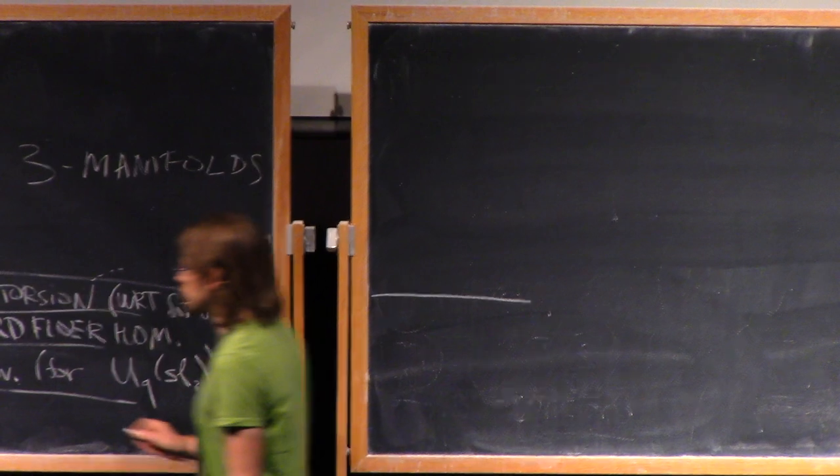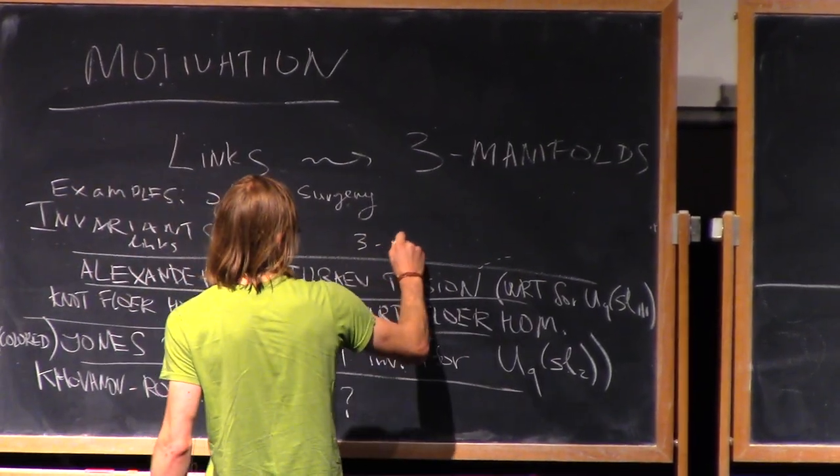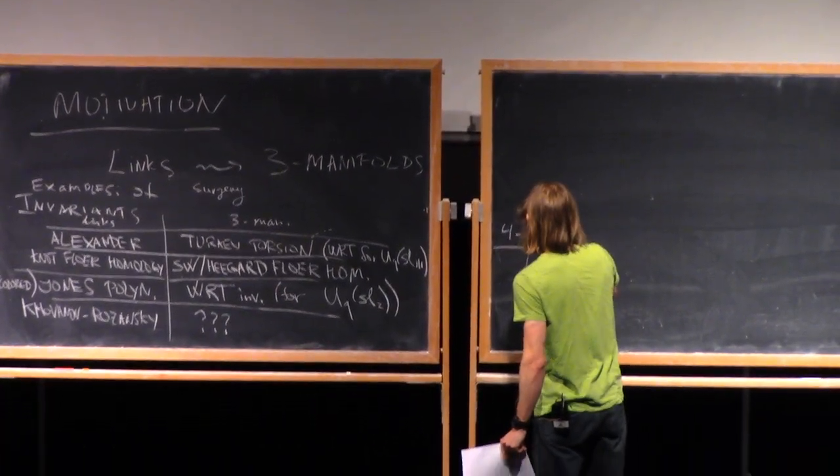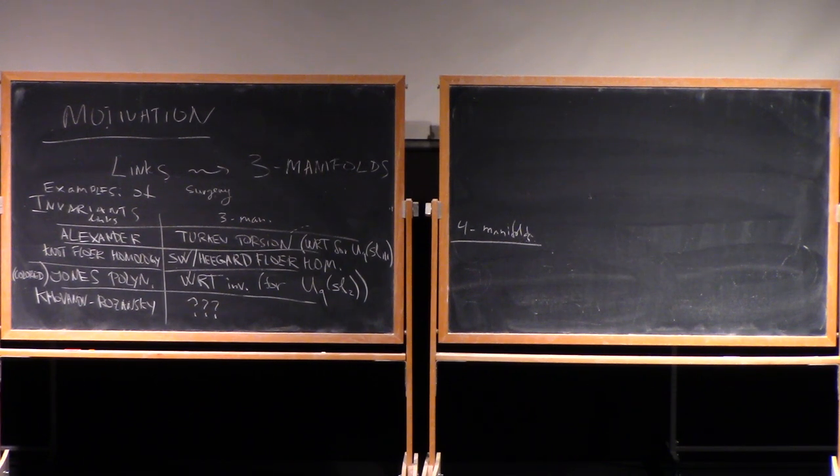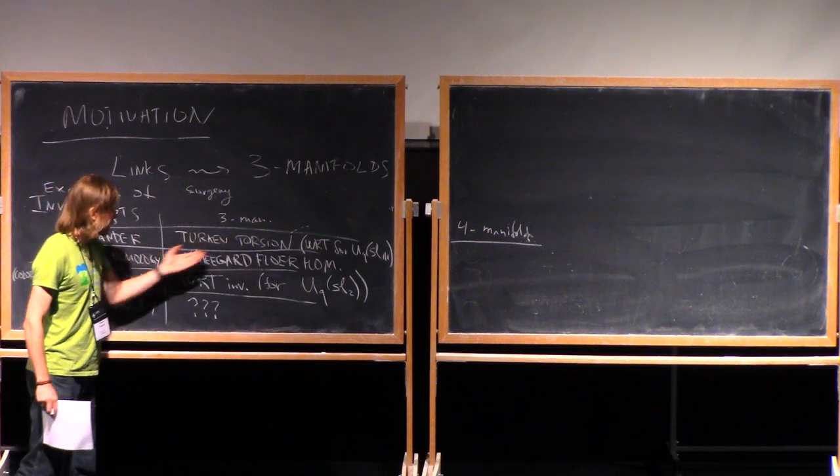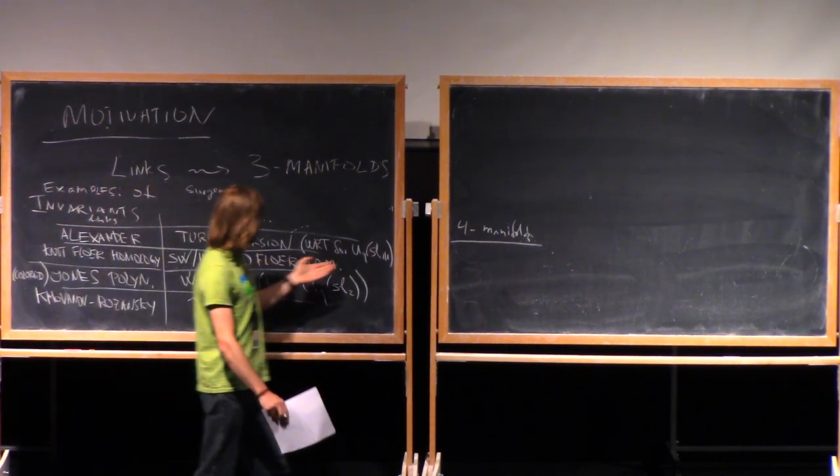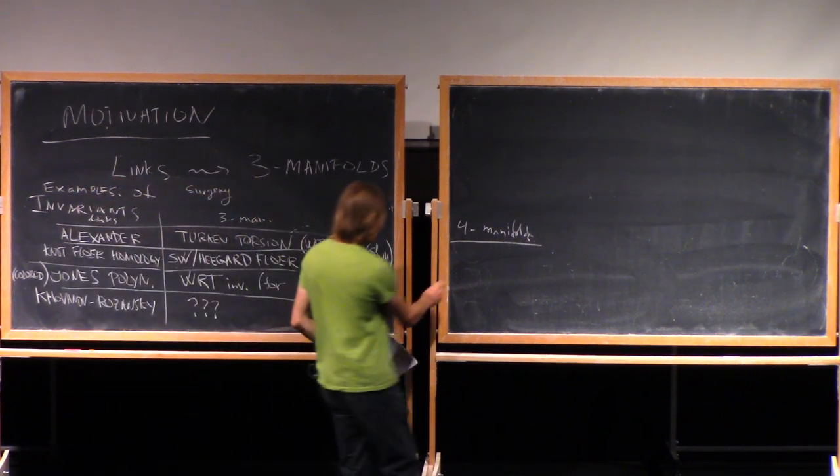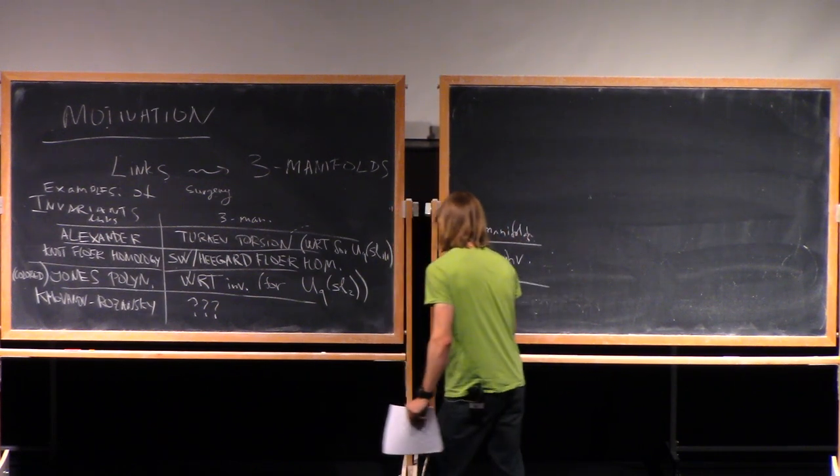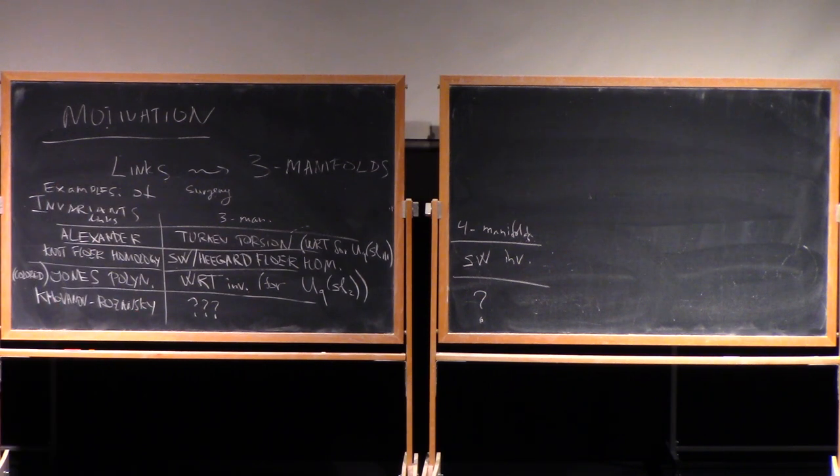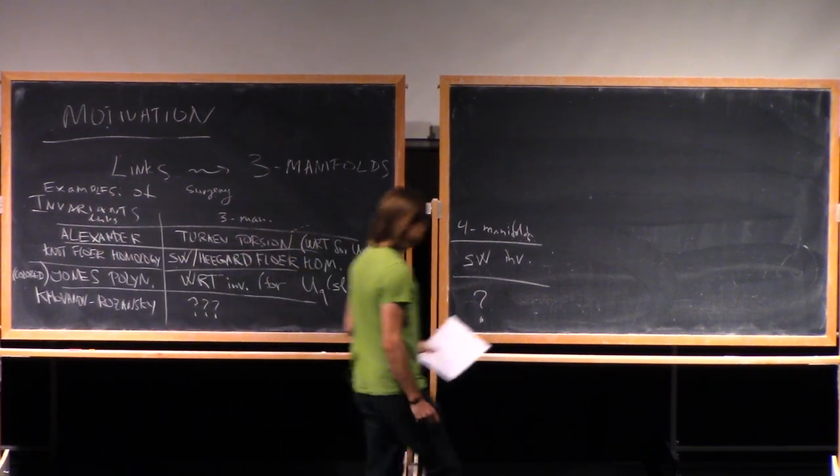One can actually also continue the table in this direction. There are links, 3-manifolds, and also invariants of 4-manifolds. In particular, if we understand these homological invariants as a vector space assigned by a TQFT functor to a 3-manifold, then there should be some corresponding numerical invariants of 4-manifolds, and here are the Ozsvath-Szabo invariants. Again, it's not clear what should be a counterpart in the lower line. Okay, so this is just general motivation. Are there any questions about this part?